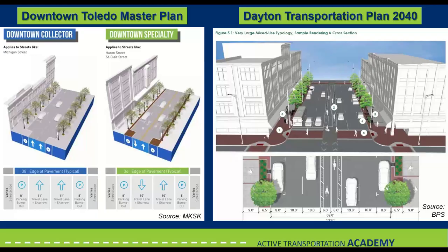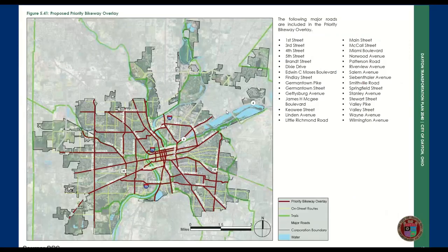Some recommendations simply suggest a network layout without delving into facility types. This example is from Dayton, where they developed a proposed priority bikeway overlay, which simply proposes a network based on street type. It also incorporates Dayton's existing bike facilities, its planned projects, and its complete street typologies.